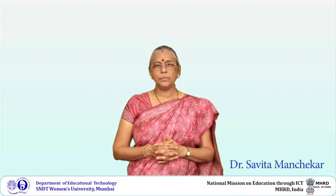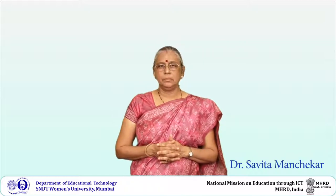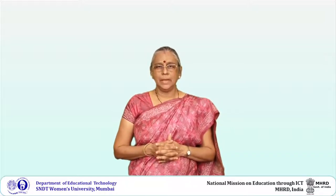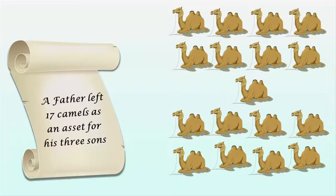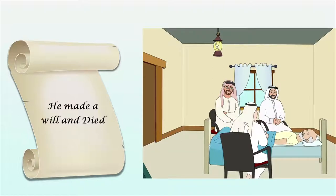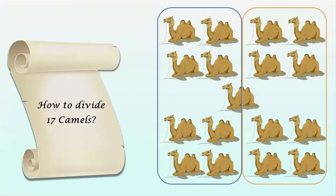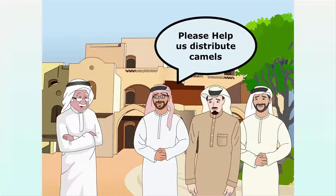Welcome to this session on one of the learning methods. Before I introduce you to this method, I would like you to look at this story. A father left 17 camels as an asset for his three sons and made a will before he died. In the will, he gave half of 17 to the eldest son, one-third to the middle son, and one-ninth to the youngest son. The sons were puzzled — they could not divide the odd number 17.